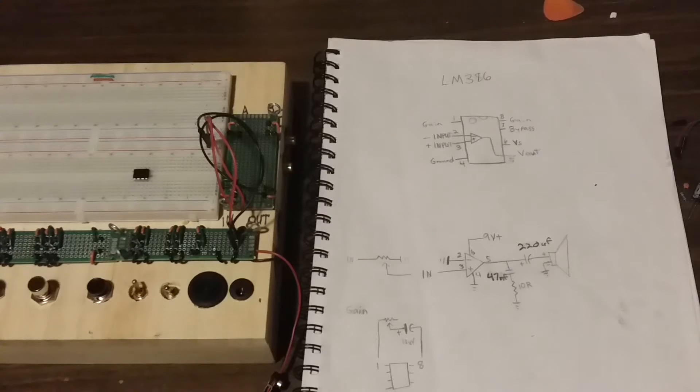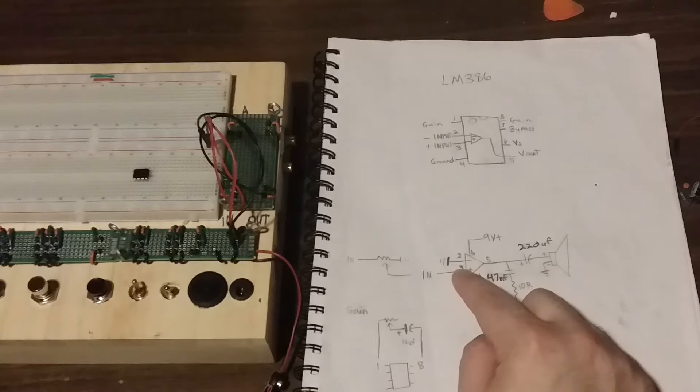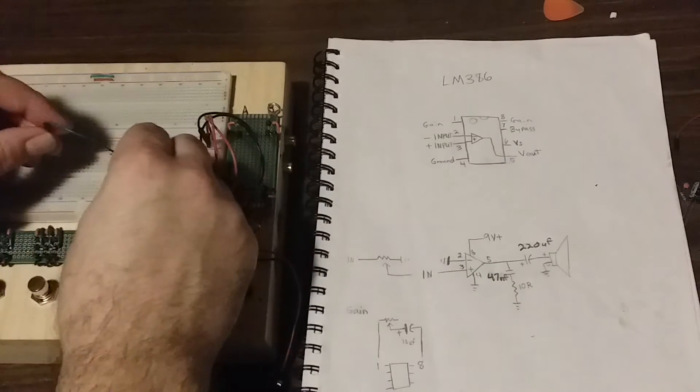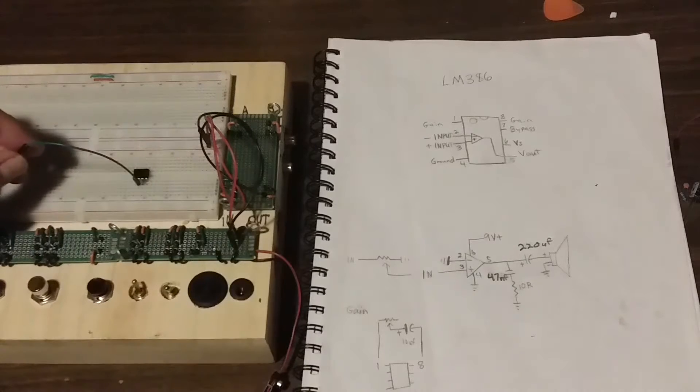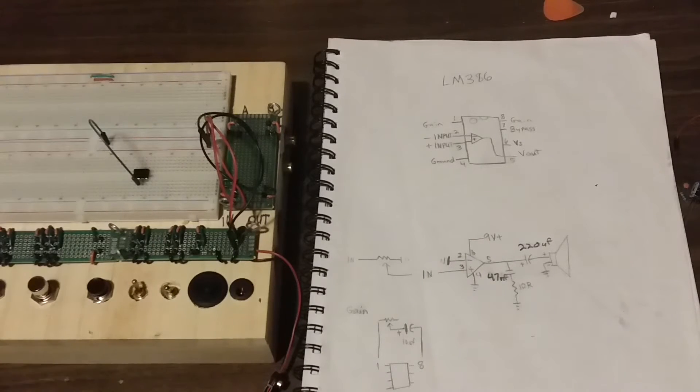The next thing we'll do is we'll start with our first pin that we're going to use, which is pin number 2. As we can see from our schematic, pin number 2 goes to ground. So I plug the cable into pin number 2 and then into my negative rail.